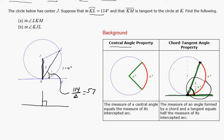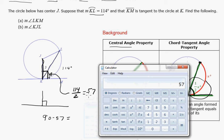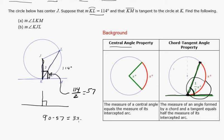So if we know this is 57 degrees and the whole thing is 90, then 90 minus 57, we can do it on the calculator, 90 minus 57 is 33. So my answer would be 33 degrees.